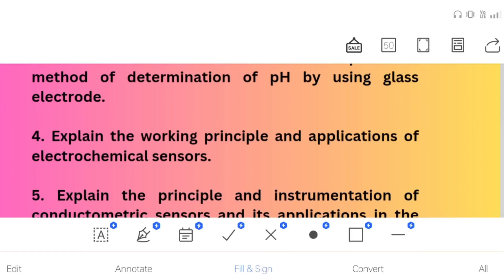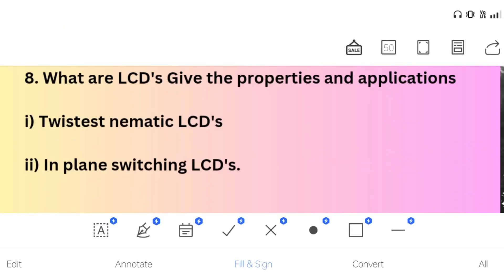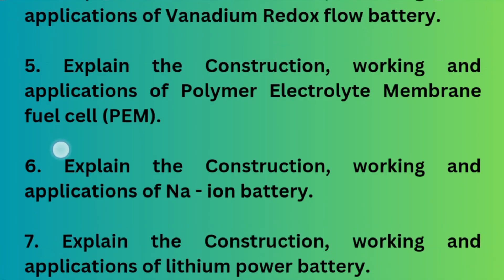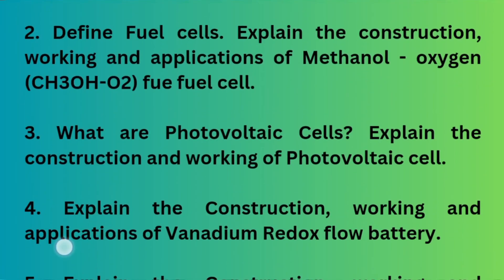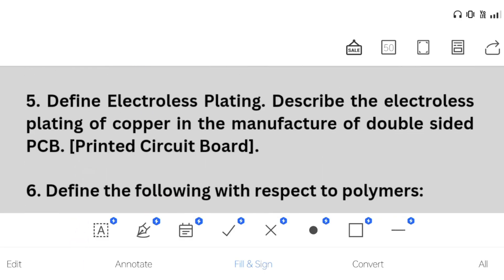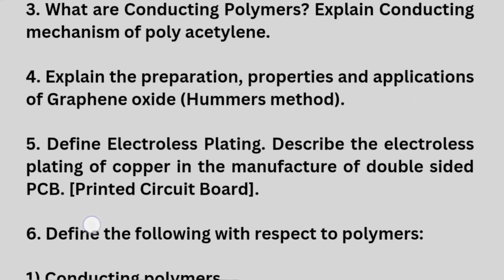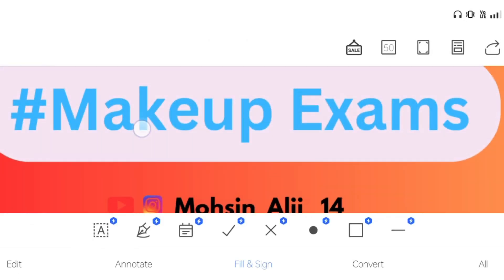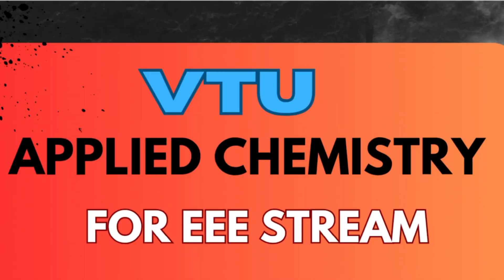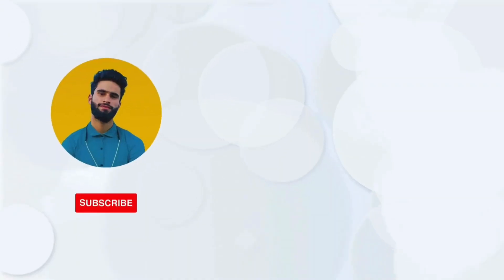So this is all about applied chemistry for EEE stream students. You can go through these important questions and clear your backlog for the subject. I wish you all the best for your examinations. Make sure you share this video with all your friends and batchmates who have backlogs in the applied chemistry subject. Thank you.